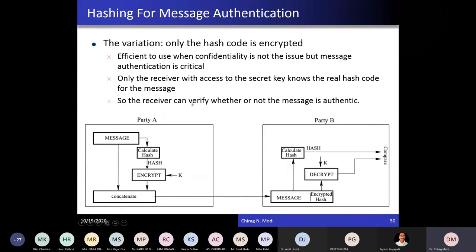The second variation is that only the hash code is encrypted; the message is kept as-is. This can be used when confidentiality is not a requirement for a given application. You calculate the hash value and encrypt that hash value using a symmetric key encryption algorithm. Both sender and receiver will have the same key. The encrypted hash value is concatenated with the message. If any attacker tries to modify the message or the encrypted hash value, the decrypted hash value will not match, so the message will not be accepted.